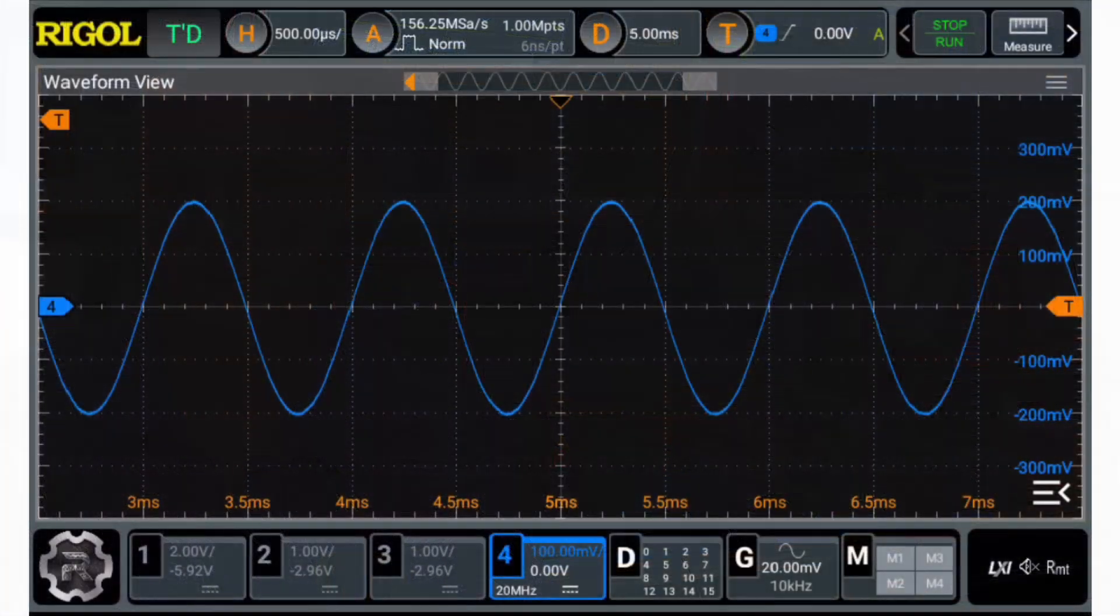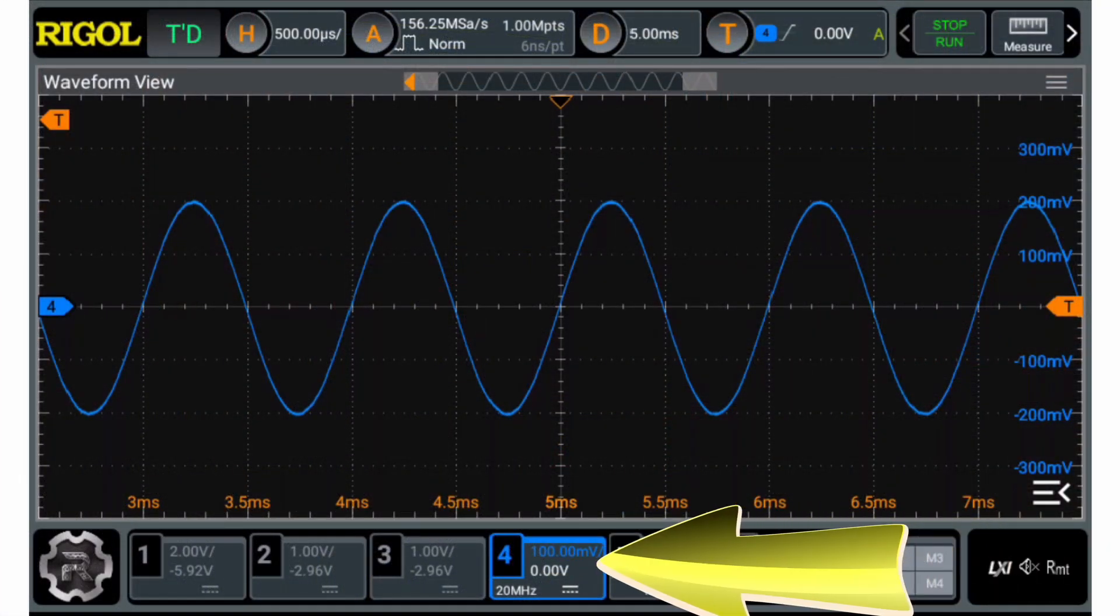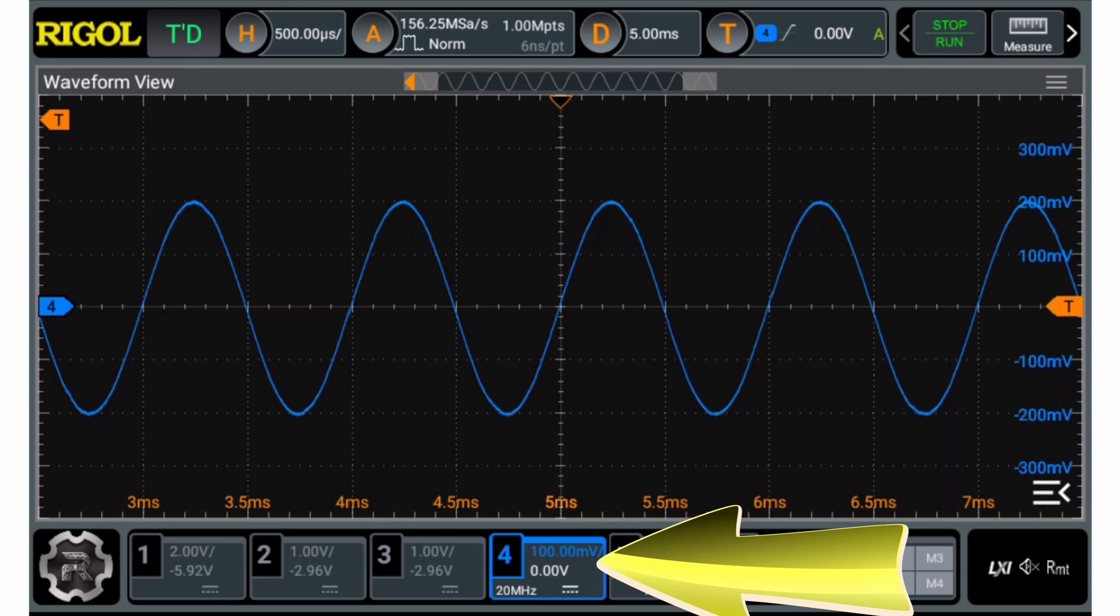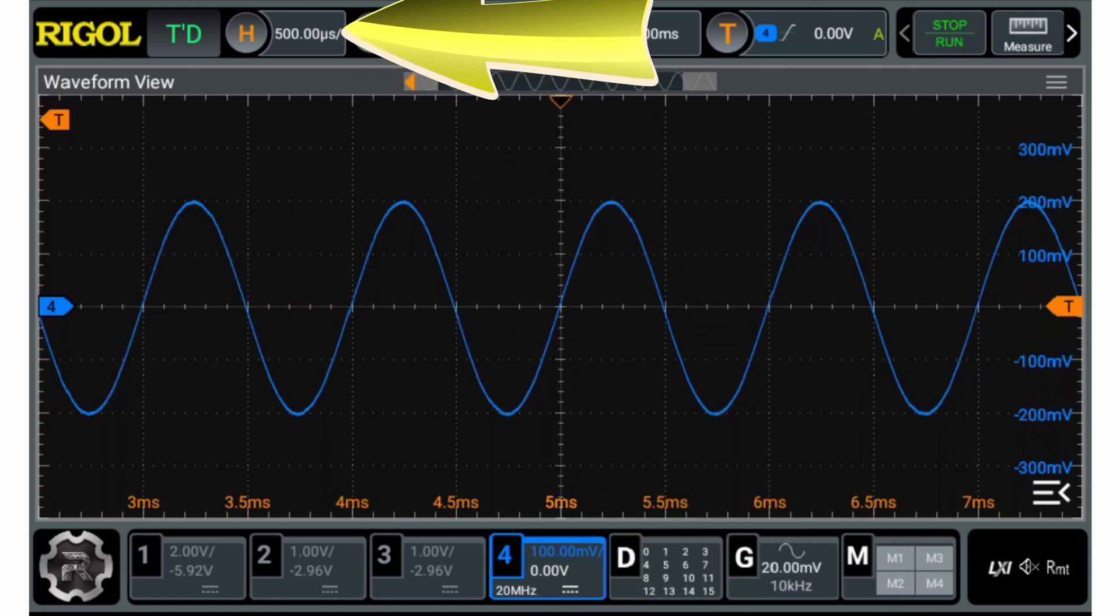Finally, my scope is set for 100 millivolts per division, so I get a nice display of the waveform and a sweep rate of 500 microseconds per division, which will give me several cycles on the screen.